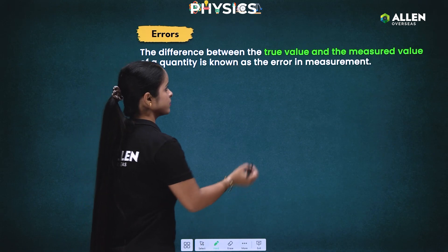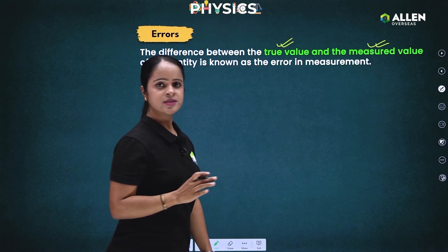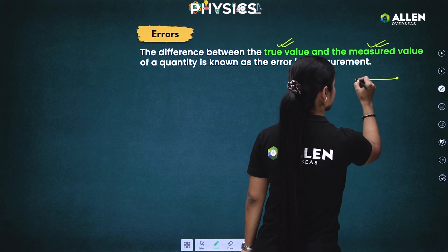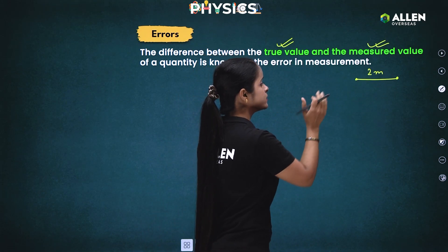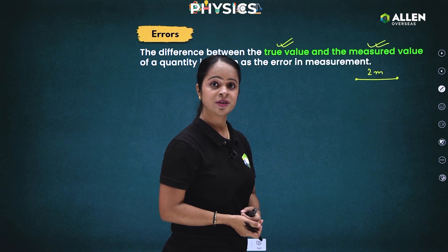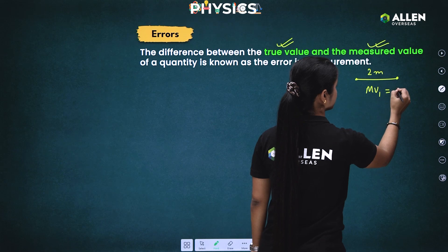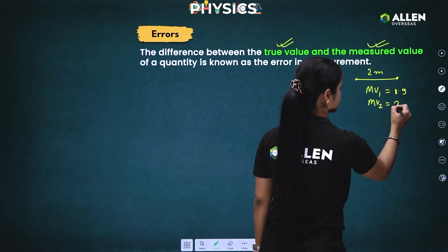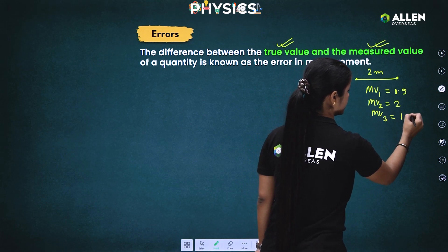The next question that would be coming in your mind: what is true value and what is measured value? In order to understand the same, let us suppose I am going to give you a wire with length 2 meters. Now, you will start measuring the length of this wire with a meter scale. In your first observation you will find the measured value is 1.9; in the second observation the measured value is 2; in the third observation it would be possible you will find 1.98.